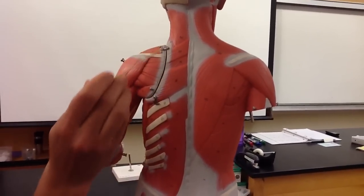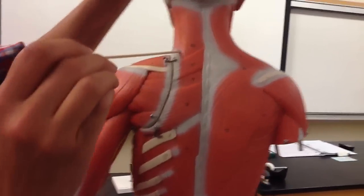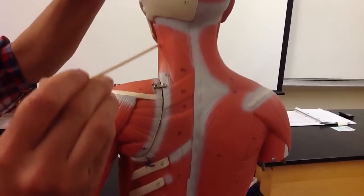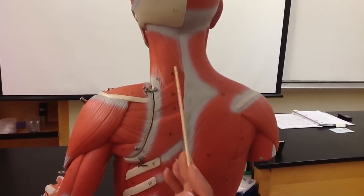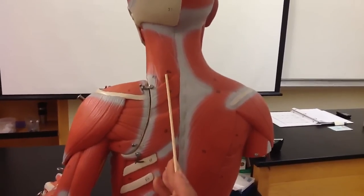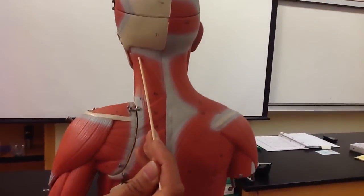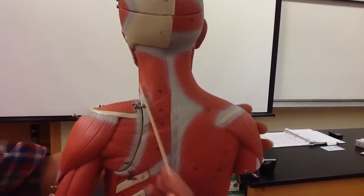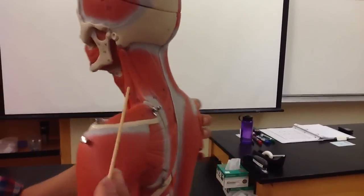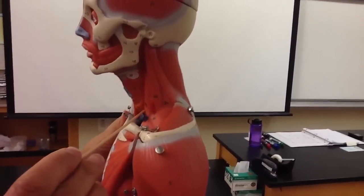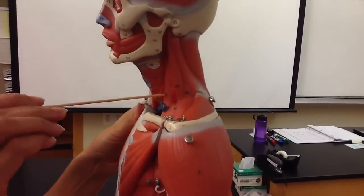Another muscle inserting on the same scapular border is the levator scapulae, which elevates the scapula. Next to it is the splenius capitis — part of the capitis group — which attaches to the head and helps extend it. In the neck we also have one, two, three scalenes: the posterior scalene, middle scalene, and anterior scalene.